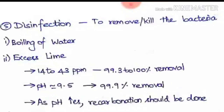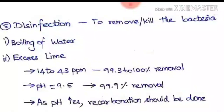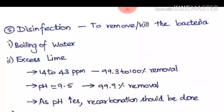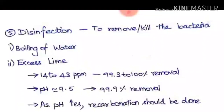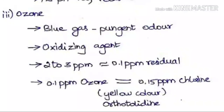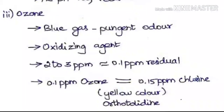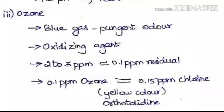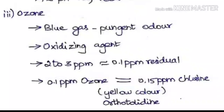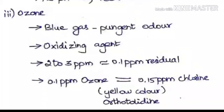Even at pH 9.5 the removal will be 99.9%. Therefore, if we are using excess lime, recarbonation should be done to reduce the pH and bring it to nearly 7 before providing to the distribution system. The third method is ozone. When ozone gas is introduced into the water it also acts as a disinfectant. It is slightly blue in color and is a pungent-smelling gas.